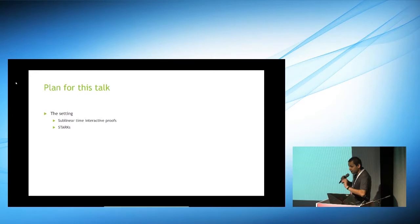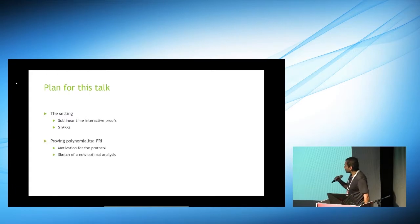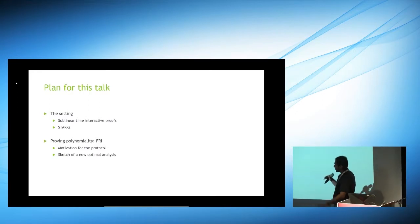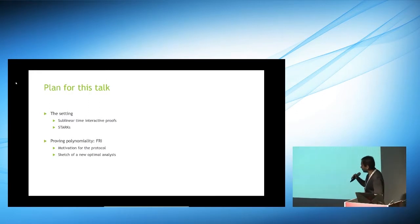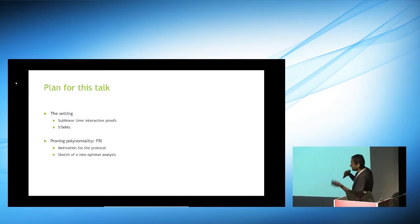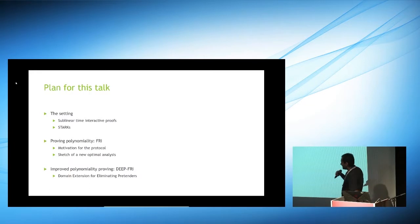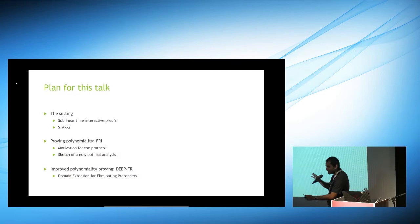The plan for this talk: I'll talk about the setting, which is sublinear time interactive proofs, and in particular STARKs. Then one of the main technical problems is proving polynomiality — to prove that something looks like a polynomial — for which there's a really nice protocol called the FRI protocol. I'll remind you what it is, give some motivation, talk about a new optimal analysis, and finally talk about Deep FRI, which gives improved polynomiality proving. It stands for Domain Extension for Eliminating Pretenders — but I'm pretty sure whatever we did, the answer would have been called Deep FRI.